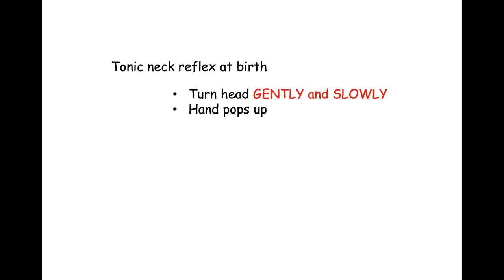In infancy, we're preconditioned with a reflex called the tonic neck reflex. You pick up the newborn, turn its head gently and slowly to one side, and that arm pops up — left turn, left arm up; right turn, right arm up. If you cast a line from the eyes to the hand, it's a direct line of sight from the foveal region to the arm.